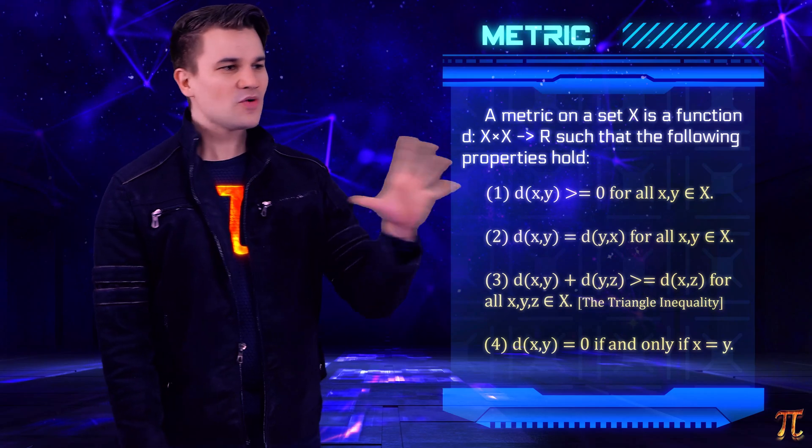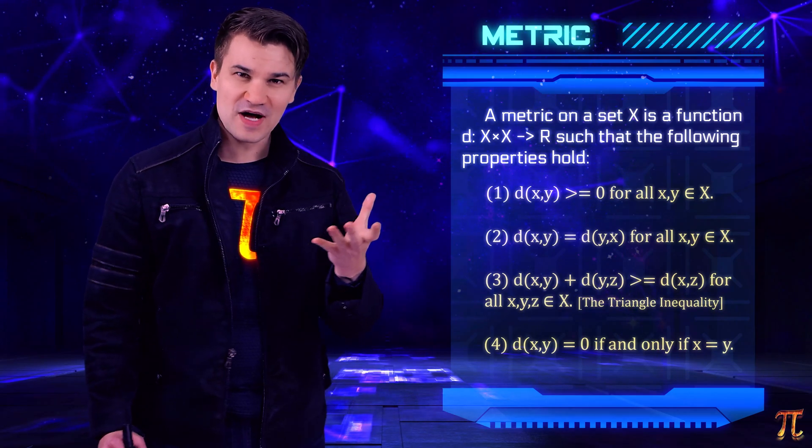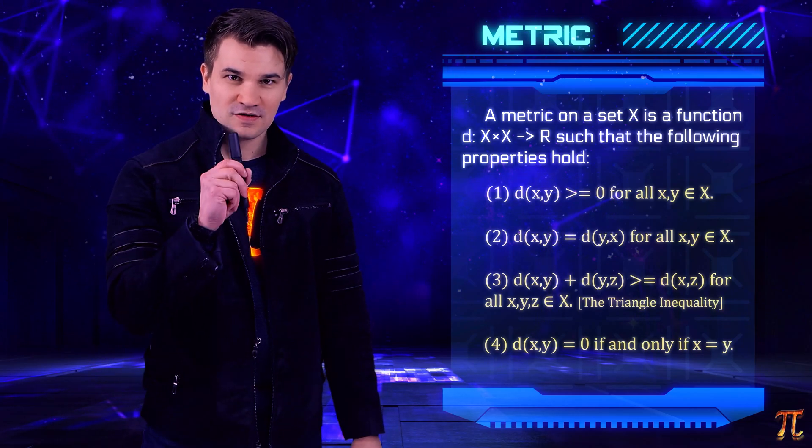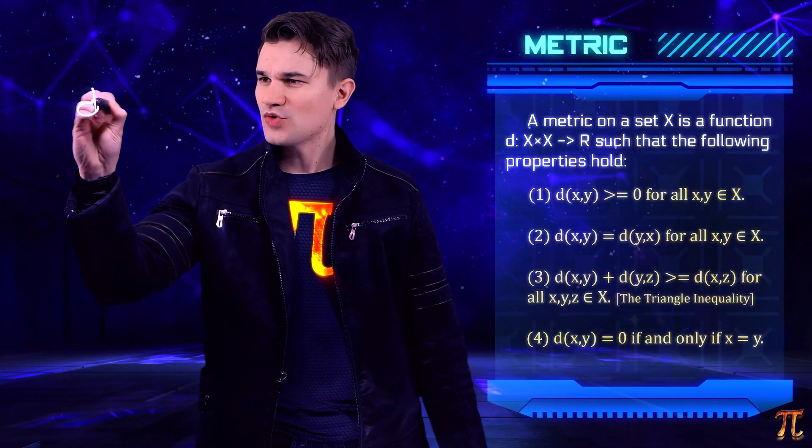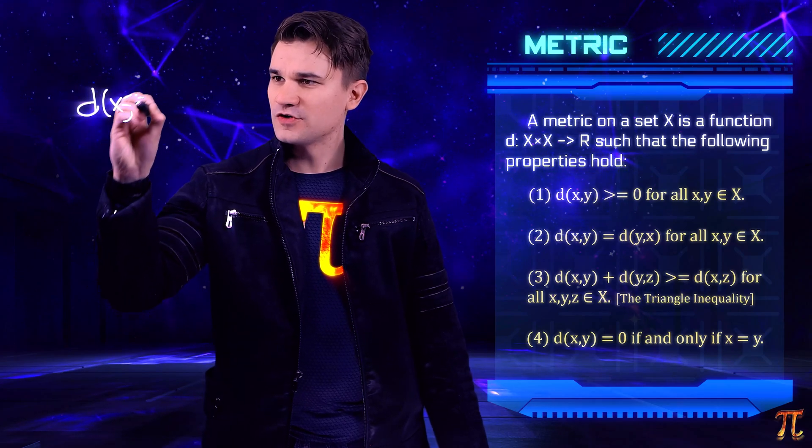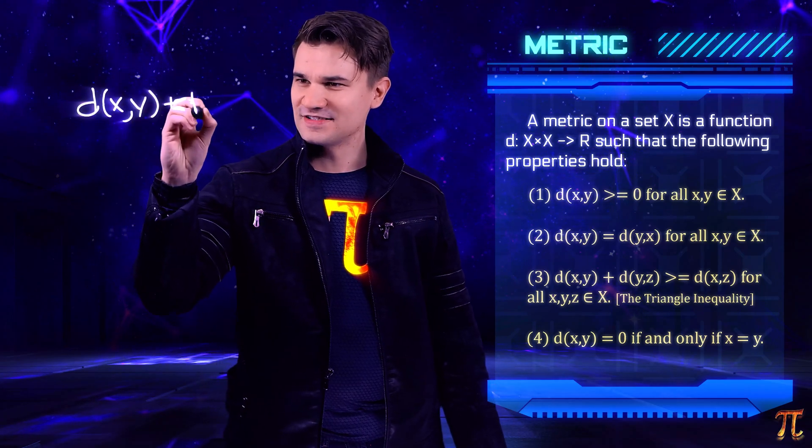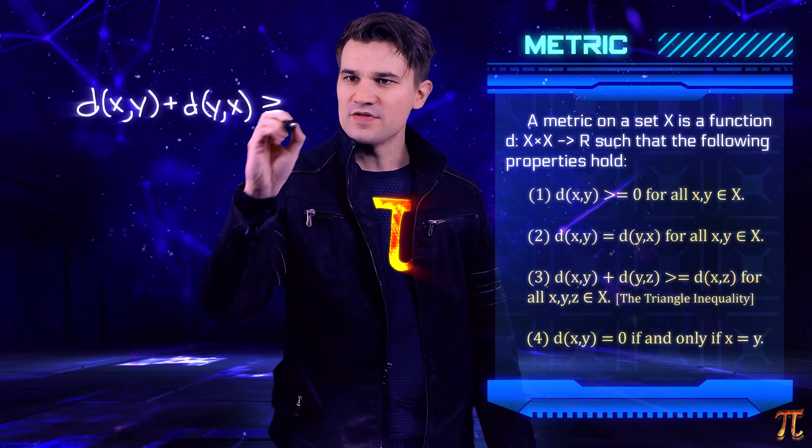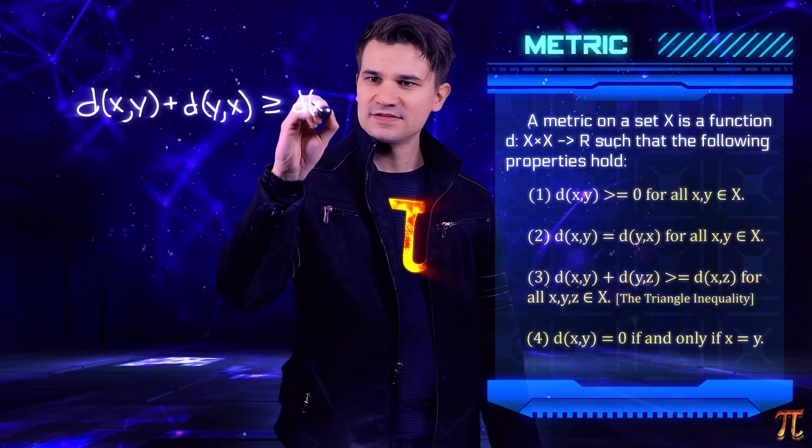We don't actually have to specify that distances are positive because that follows from the other three properties that we put on a metric. This is how: by the triangle inequality, the distance from x to y plus the distance from y to x is greater than the distance from x to x. This is for any two points x and y.